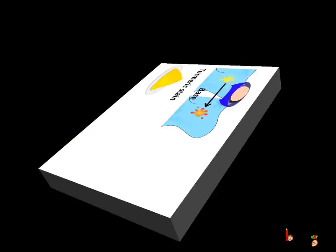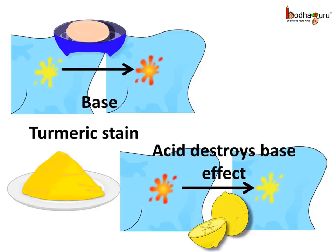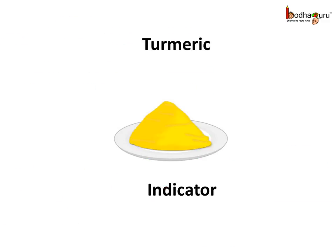Strange isn't it? Let me explain. As we know, soap is basic in nature and lemon contains citric acid. The turmeric stain turns red when it comes in contact with the basic soap. Now the acid in the lemon destroys the base effect and the turmeric stain becomes yellow again. In the same way, some other natural complex substances change their color when they come in contact with basic or acidic substances, and these substances are called indicators.